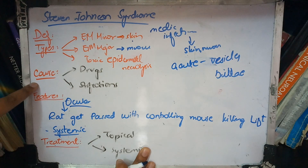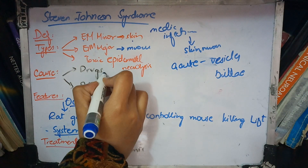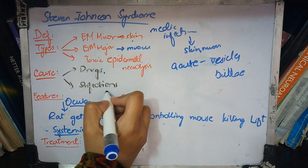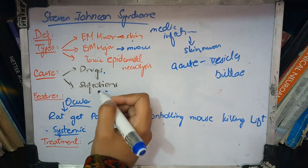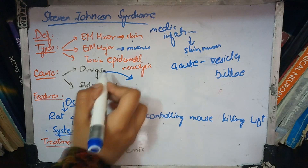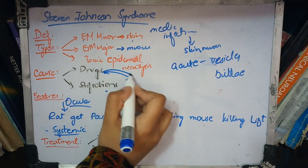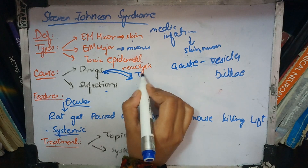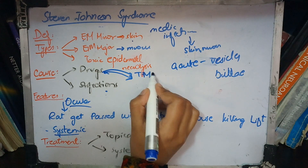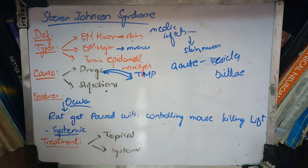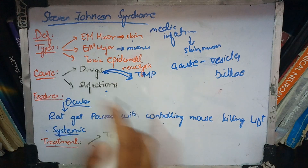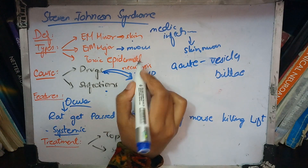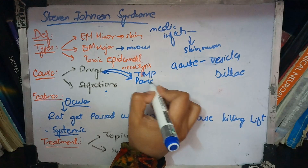Regarding causes, I mentioned earlier it can be due to any medication or infection. For drug causes — important for MCQs — there are three main groups. The first group is antibiotics, specifically trimethoprim-sulfamethoxazole, which belongs to the sulfonamides group. This is the main drug cause.